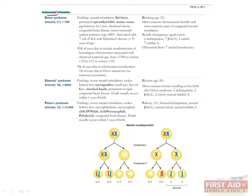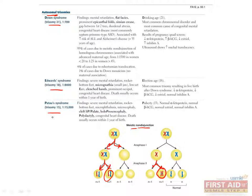Autosomal trisomies occur when three homologous chromosomes are present in a zygote rather than the normal set of two. This can occur due to a variety of defects during meiosis. Non-disjunction is when chromosomes fail to separate during meiosis — non-disjunction during meiosis I will result in both homologous chromosomes ending up in one gamete, and non-disjunction during meiosis II can result in having two sister chromatids in one gamete. Chromosomal translocations can also result in autosomal trisomies. The three most common are trisomy 21 or Down syndrome, trisomy 18 or Edwards syndrome, and trisomy 13 or Patau syndrome. Trisomies of the other chromosomes are not viable.